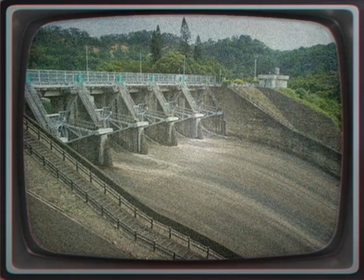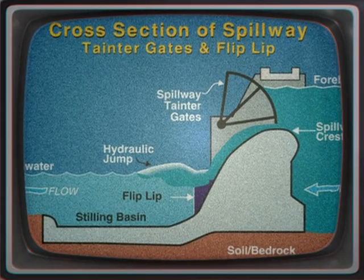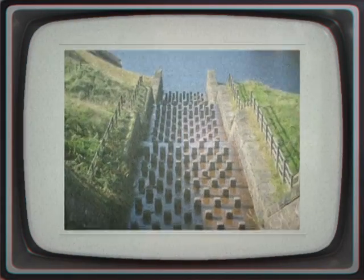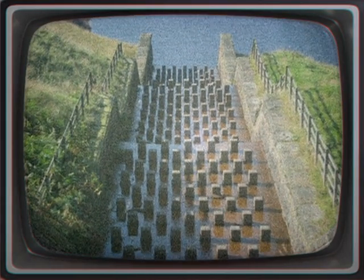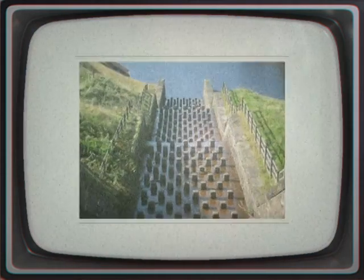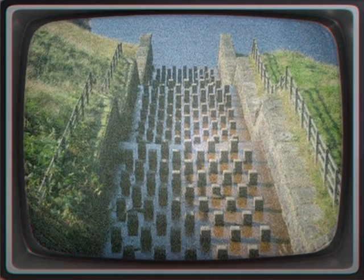A spillway is located at the top of the reservoir pool. Dams may also have bottom outlets with valves or gates which may be operated to release flood flow, and a few dams lack overflow spillways and rely entirely on bottom outlets. There are two main types of spillways: controlled and uncontrolled.